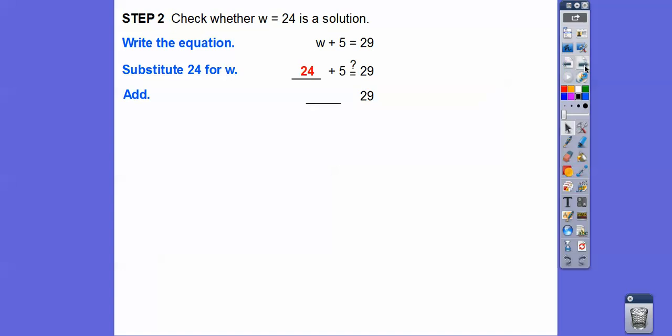So now we add those together. 24 plus 5 is 29, and 29 does equal 29. So the equation is true when w equals 24. So w equals 24 is a solution.